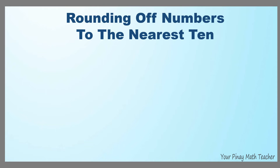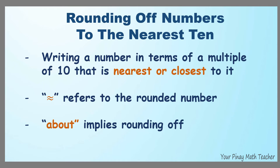What does rounding off numbers to the nearest 10 mean? It is writing a number in terms of a multiple of 10 that is nearest or closest to it. This symbol refers to the rounded number, and the word 'about' implies rounding off.